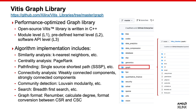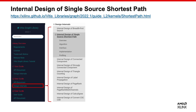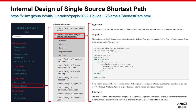From the doc portal, you can find information like the internal design of SSP — all the useful information including implementation, interface, and profiling. In this design, the implementation is based on the Bellman-Ford algorithm equipped with a first-in, first-out queue. The idea for Bellman-Ford algorithm involves processing all edges with relaxation in iterations of n-1.